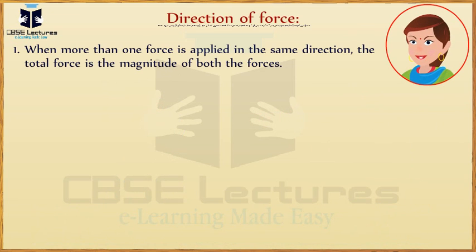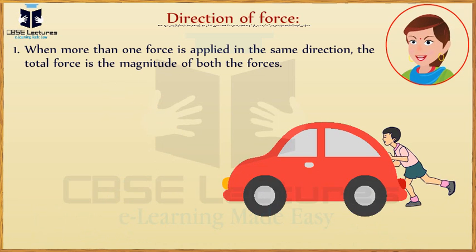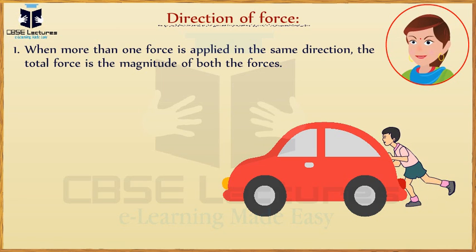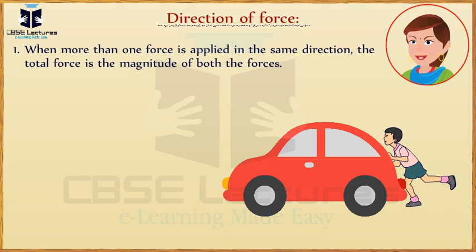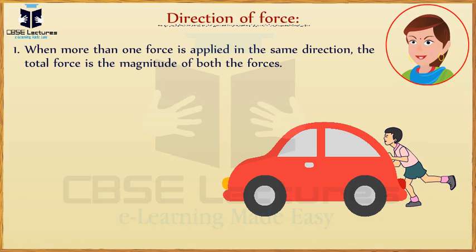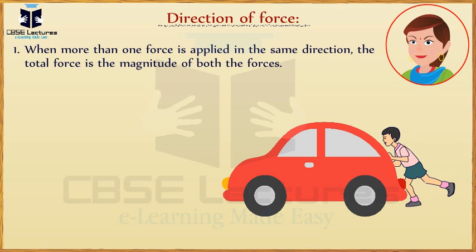When more than one force is applied in the same direction, the total force is the magnitude of both the forces. For example, it is difficult to push a car by a single person. Two or more persons can collectively push the same car easily. This is because when more than one person tries to push the car, the magnitudes of force applied by each person are summed up and applied over the car.